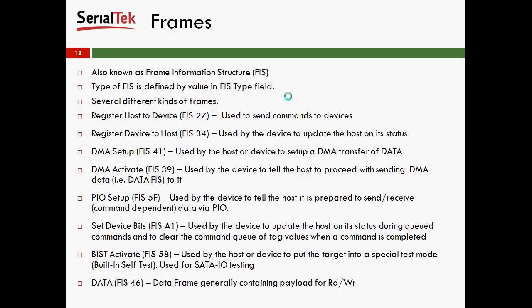Set Device Bits, FIS-A1, is used by the device to update the host on its status during queued commands, and also to clear the command queue of tag values when a command is completed. In Serial ATA, you have a concept of having multiple outstanding commands. Each command is given a unique identifier called a tag, and Set Device Bits is able to clear many tags at once.